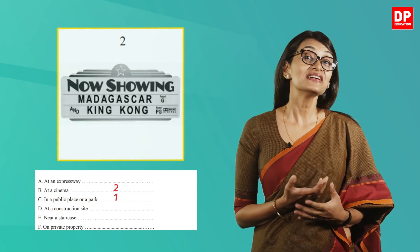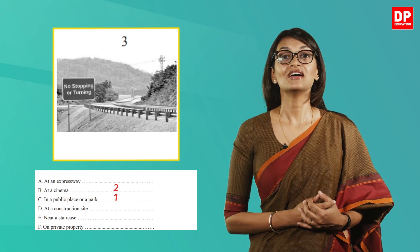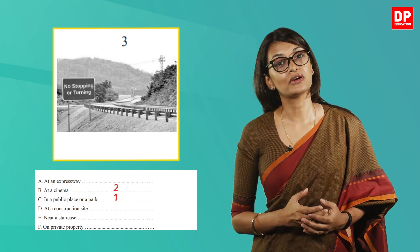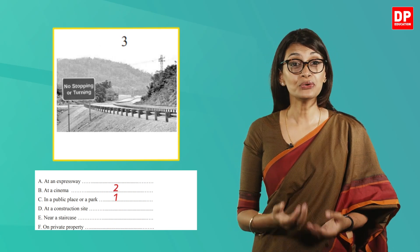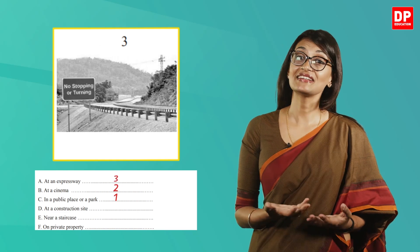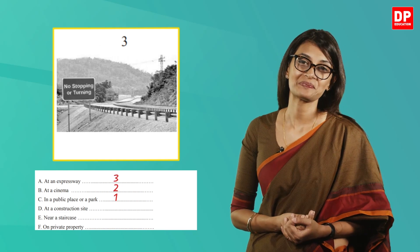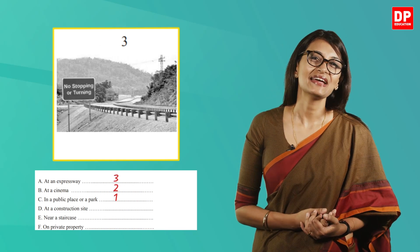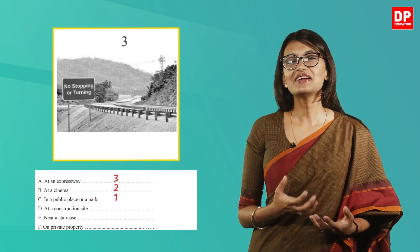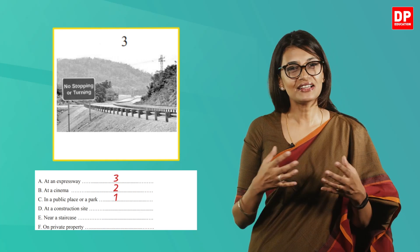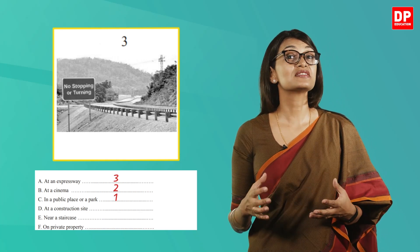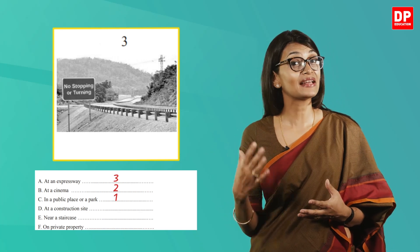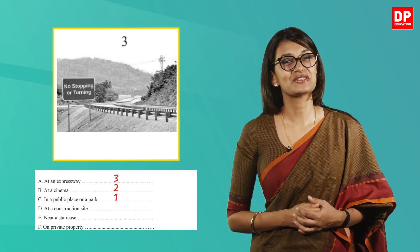The third sign is placed next to a road and states 'No stopping or turning.' It is therefore a sign you would find at an expressway — a high-speed divided highway that requires vehicles to move quickly without stopping. Answer A.